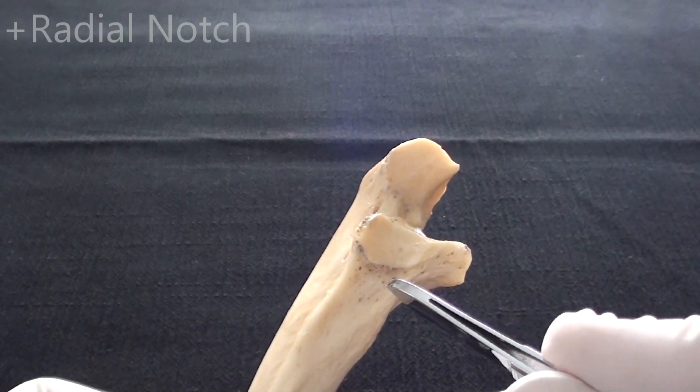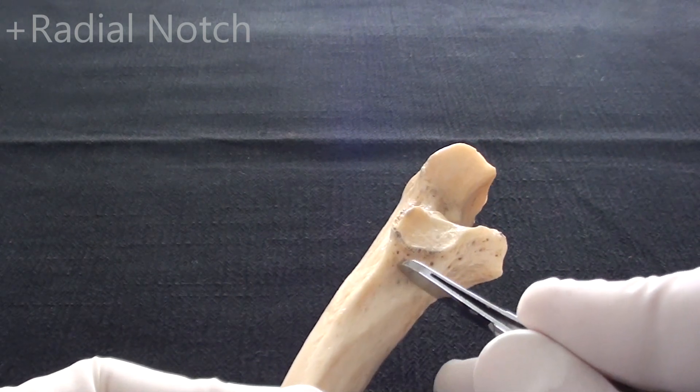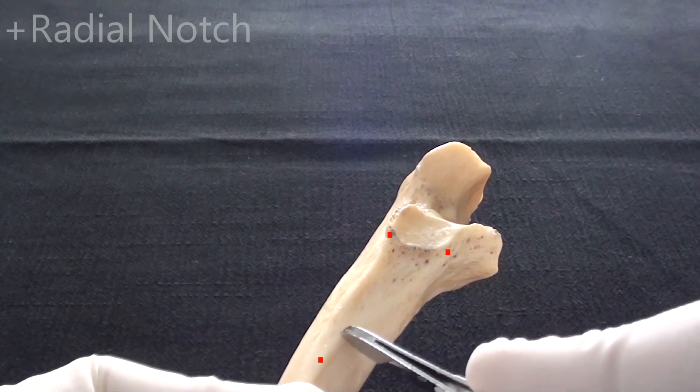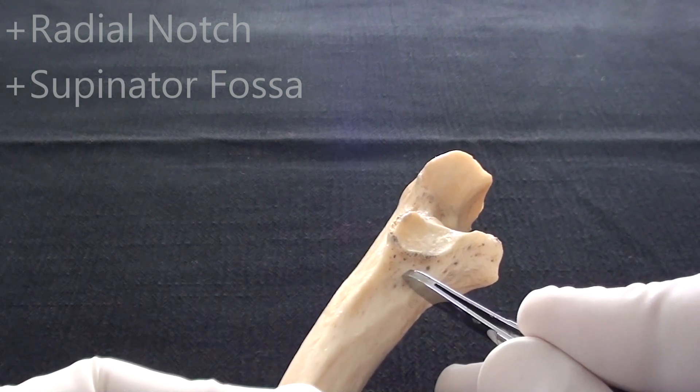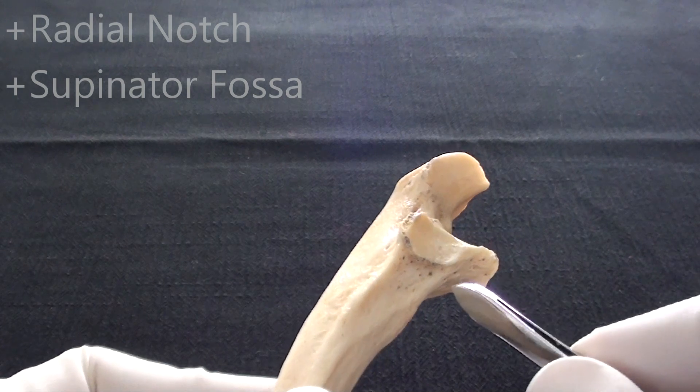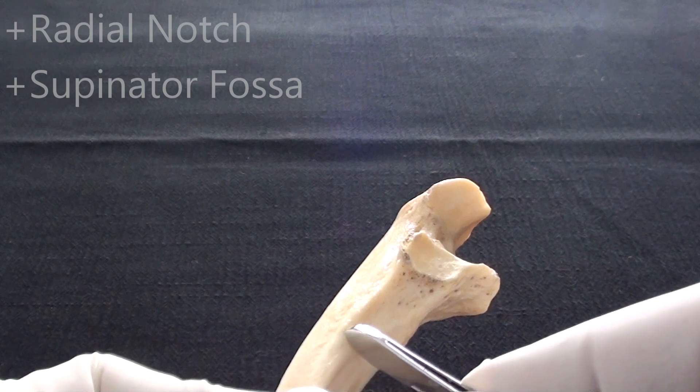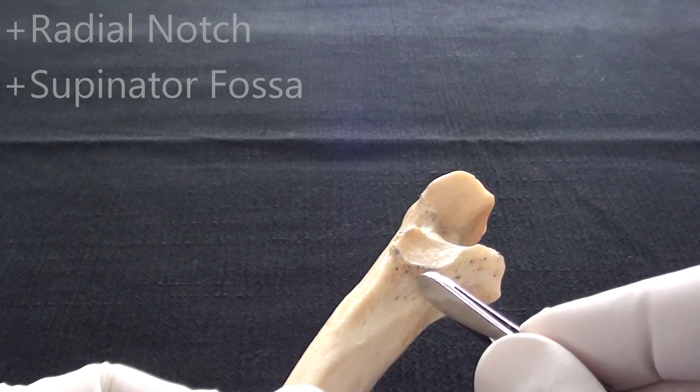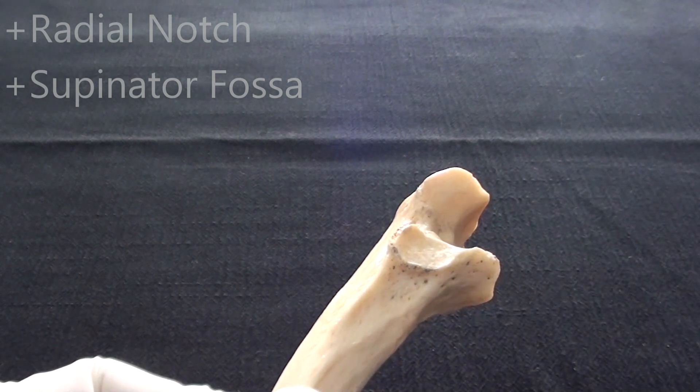Immediately inferior to it, we are going to see another interesting area which is shaped a little bit like a triangle and this area of the bone is known as the supinator fossa. Supinator fossa will offer origin for the muscle with the same name, the supinator muscle. Based on the activity of the muscle during life, there might be another ridge that this muscle produces, called the supinator crest. Both landmarks are found immediately inferior to the radial notch of the ulna.